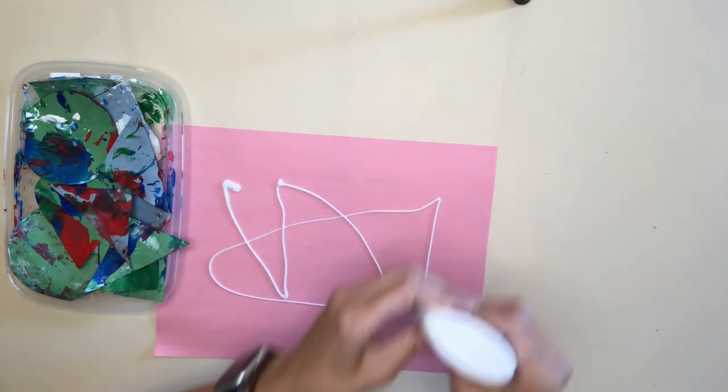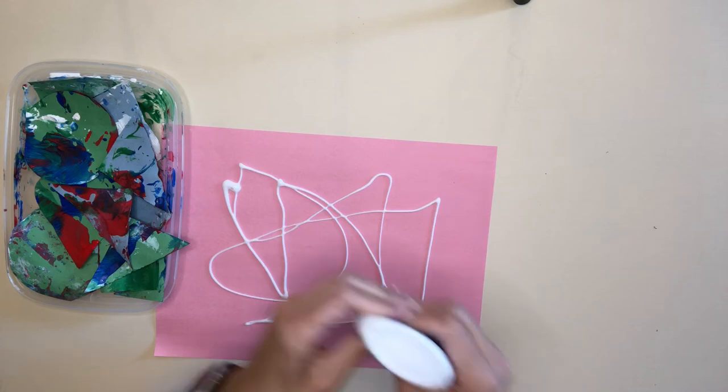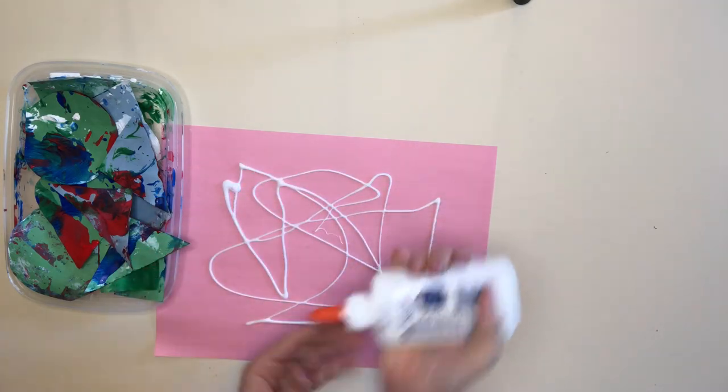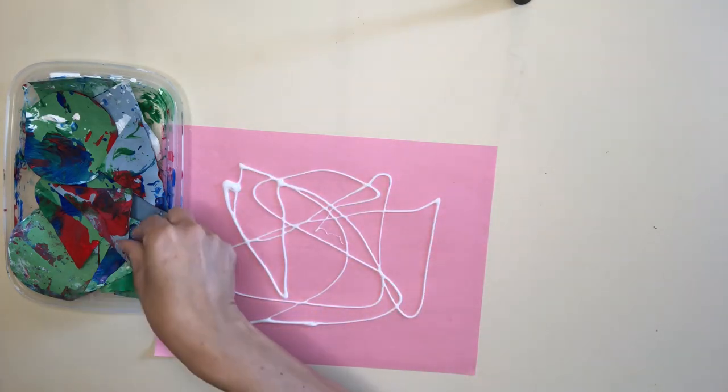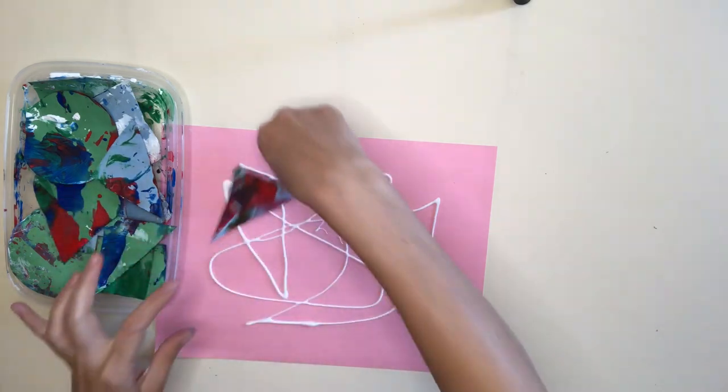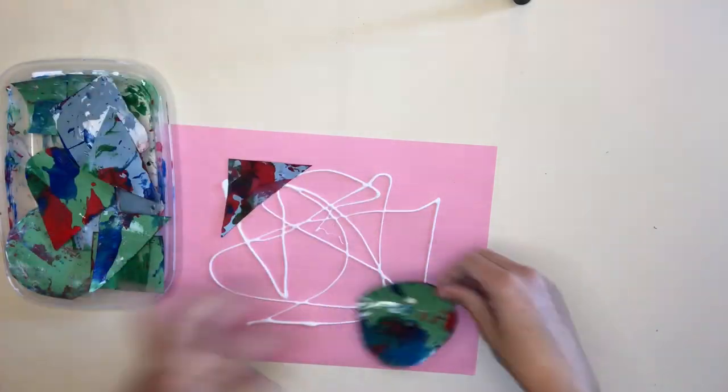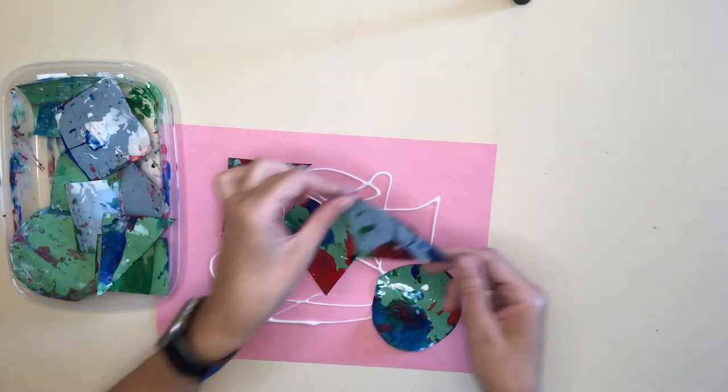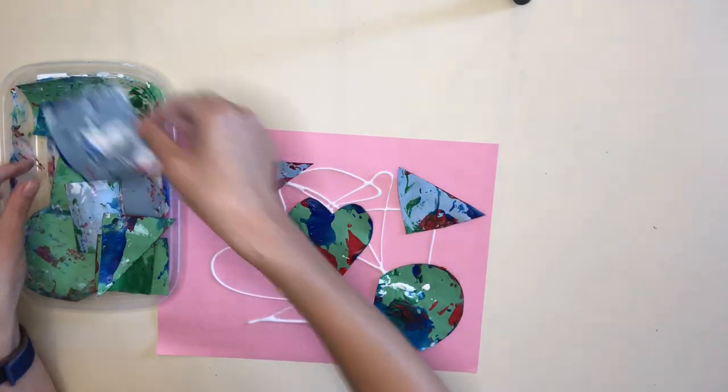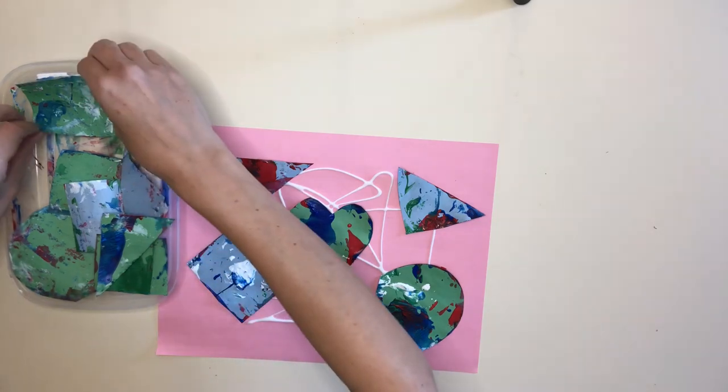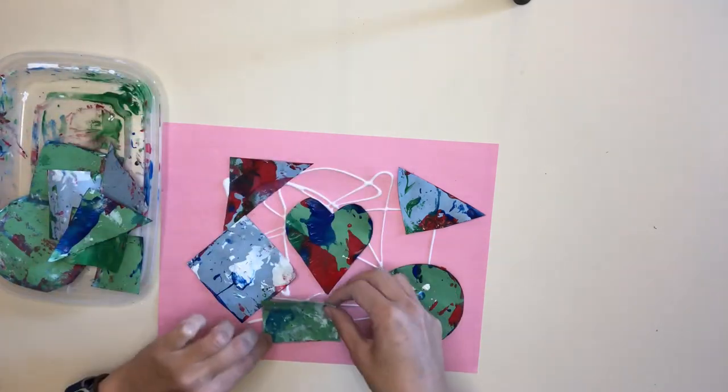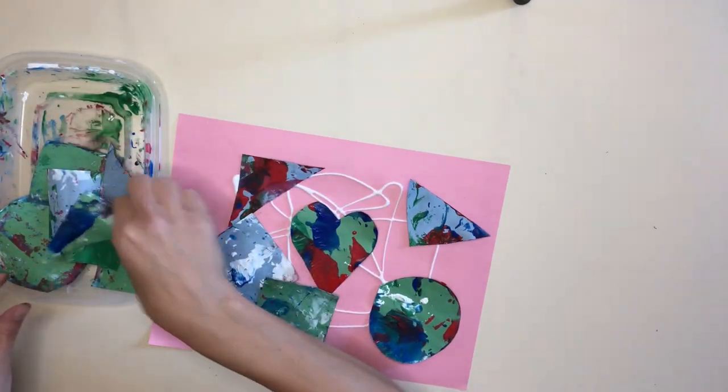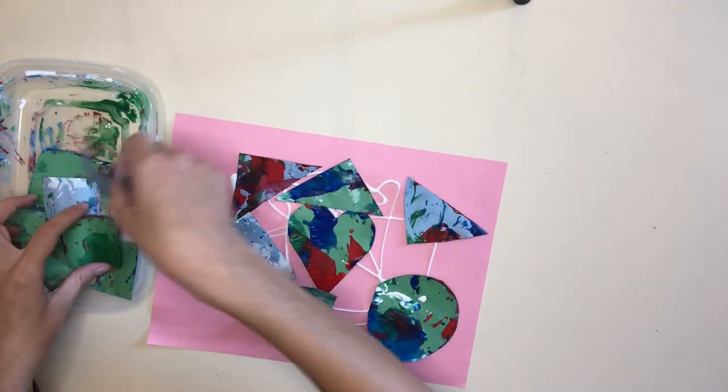So I'm just going to cover up all the pieces. Okay, so here we go—put some here, maybe over here. I think I'm going to put the heart right in the middle. Put one over here.